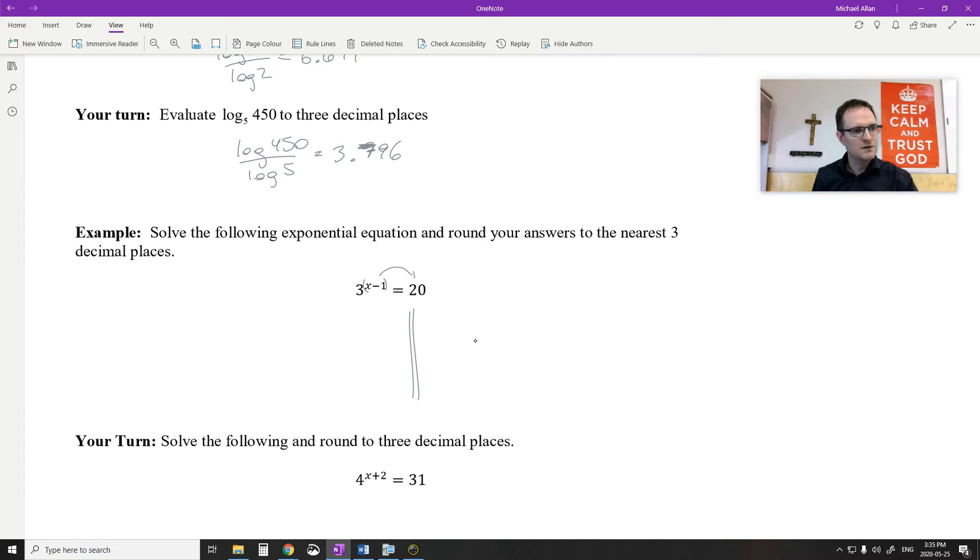So I get x minus 1 on the right side. And on the left side, I'm going to have log base 3 of 20. I'm going to add 1 to both sides. So this would be log base 3 of 20, plus 1. I'm going to find this number first.